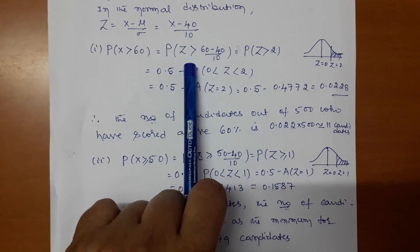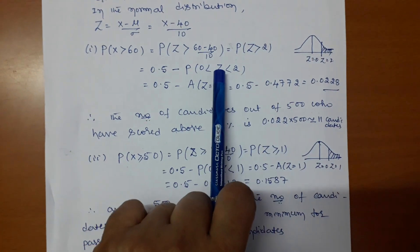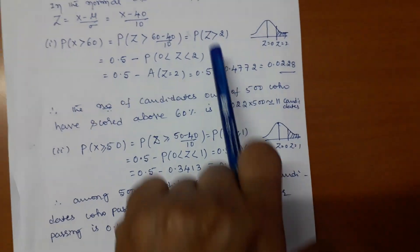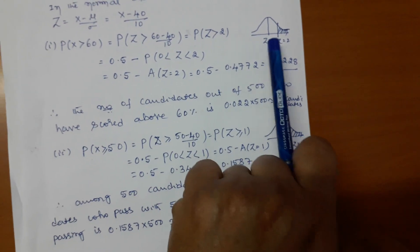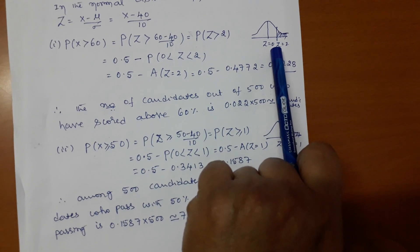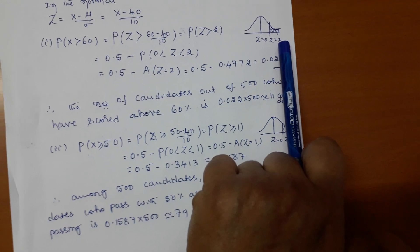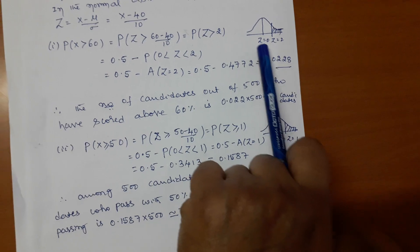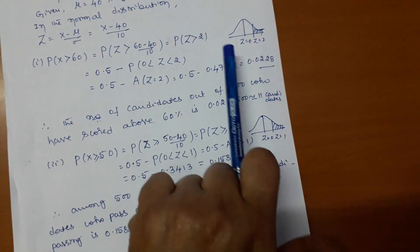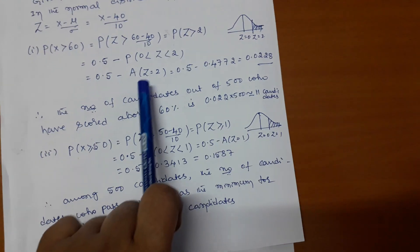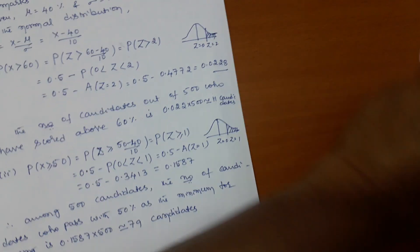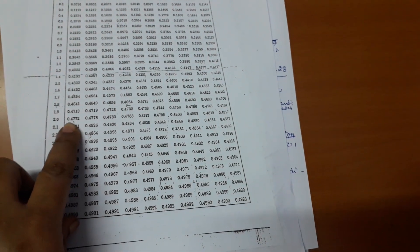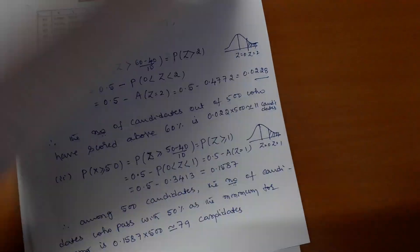Converting X to Z: (60 − 40)/10 gives us P(Z > 2). To identify the area for Z > 2 in the standard normal distribution curve: P(Z > 2) = 0.5 − P(0 < Z < 2). The area from 0 to 2 — we take the table and search for Z = 2.00, which gives 0.4772.